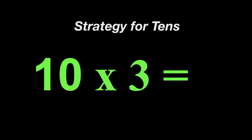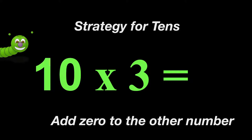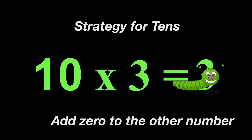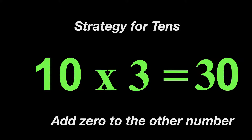Our strategy for 10s is simply that you add a 0 to the other number. So for example, 10 times 3 — the other number is 3. Wally is going to show us where to put it. So we put the 3, that's the other number, and then we are just going to add a 0. So our answer is 30; 10 times 3 is 30. Let's try another one.